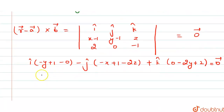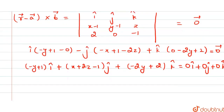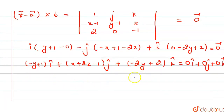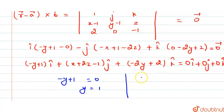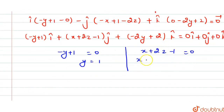This gives: minus y plus 1 i cap, plus x plus 2z minus 1 j cap, plus minus 2y plus 2 k cap, equals 0 vector. Comparing components of i cap: minus y plus 1 equals 0, which implies y equals 1. From j cap: x plus 2z minus 1 equals 0. Substituting z equals minus 1: x minus 2 minus 1 equals 0, so x equals 3.